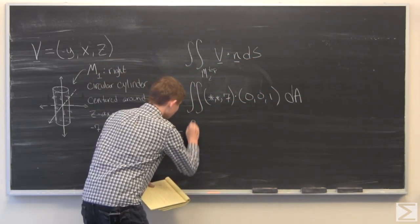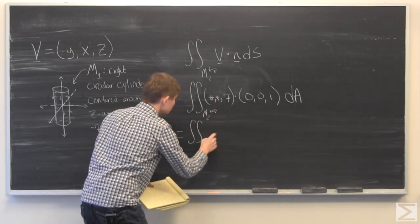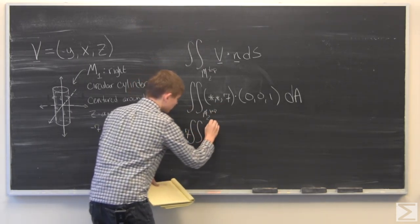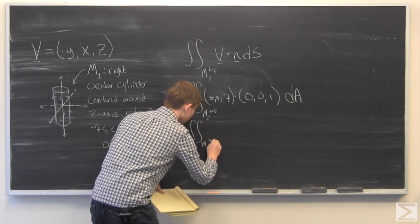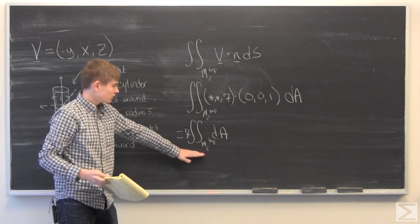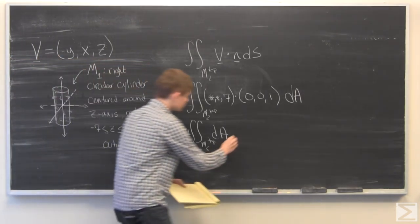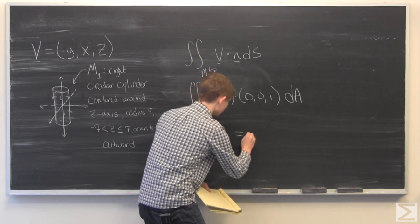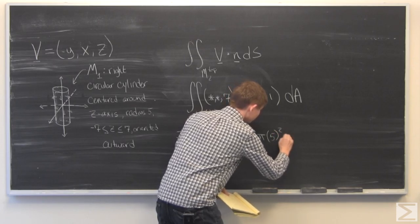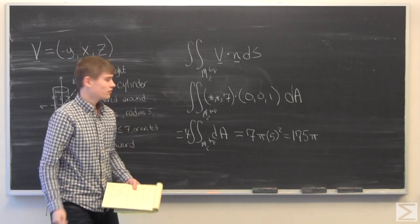This simplifies, oh this is M2 top, to 7. We can pull that 7 out. And this just becomes the area integral of the disk of radius 5, which we should all know is just pi times the radius squared, which comes out to 175 pi.